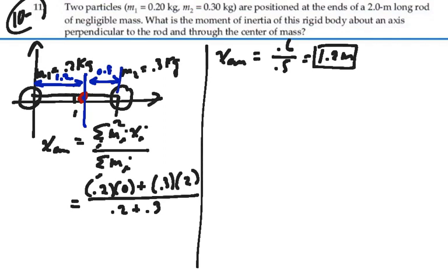So if we had an axis right there at the center of mass, we could calculate the moment of inertia about that point. The moment of inertia is the summation of every mass multiplied by its distance from the axis, squared.